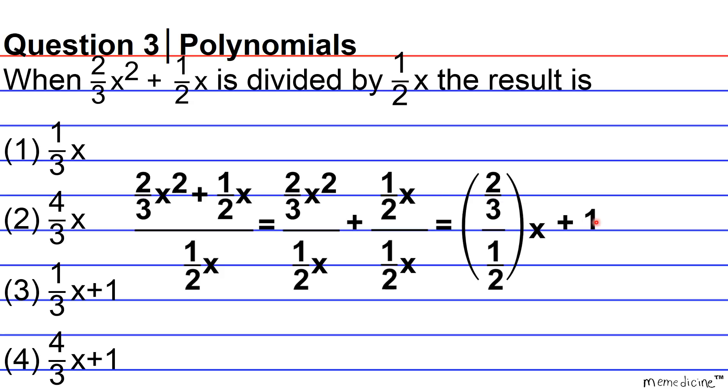Again, I just simplified this expression into 1. And we're not going to visually depict it here, but we're simply just going to basically multiply 2 over 3 by 2 over 1, which is the reciprocal of 1 half, to get 4 over 3x.